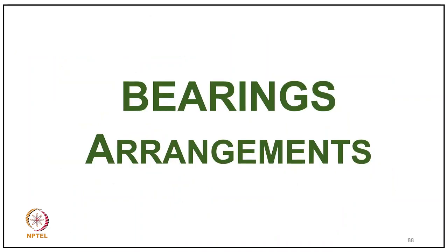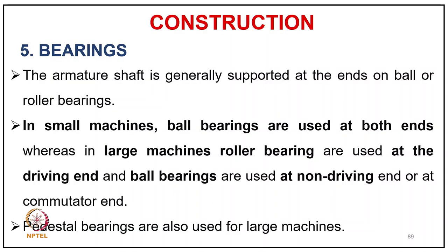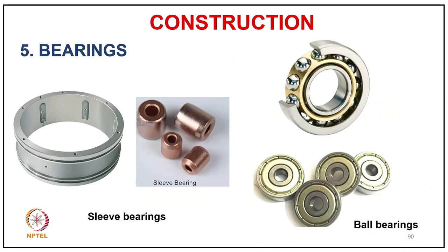The armature shaft is generally supported by ball or roller bearings. In small machines, ball bearings are used at both ends. In large machines, roller bearings are used at the driving end and ball bearings at the non-driving (commutator) end. Pedestal bearings are also used for large machines.